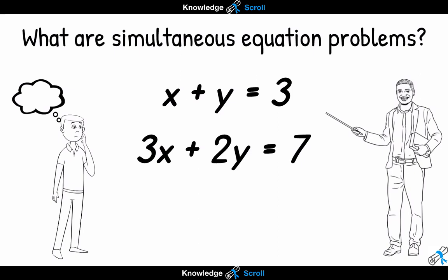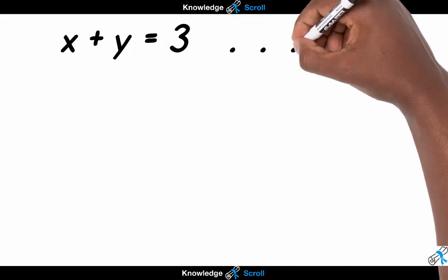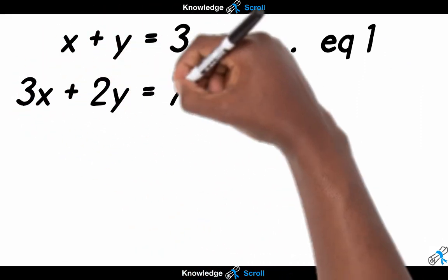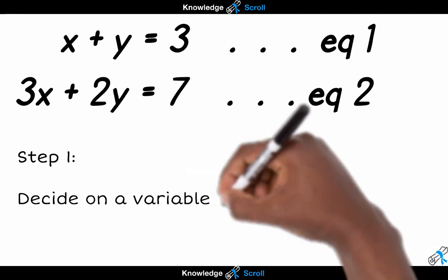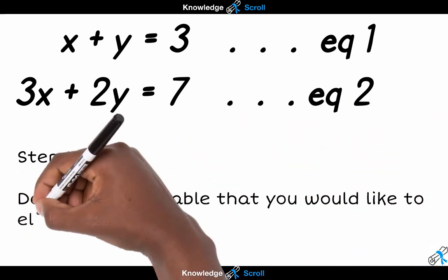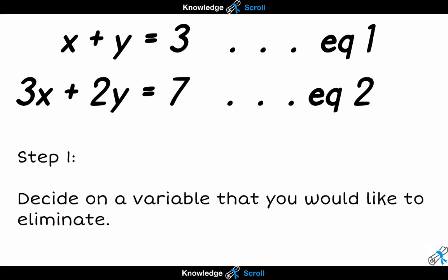But today we're going to focus on the elimination method. So let us look at our two questions again, and we're going to label them equation 1 and equation 2. The first step involves deciding on which variable you would like to start with first. This will be eliminated later in your working, and for this example we can choose x.